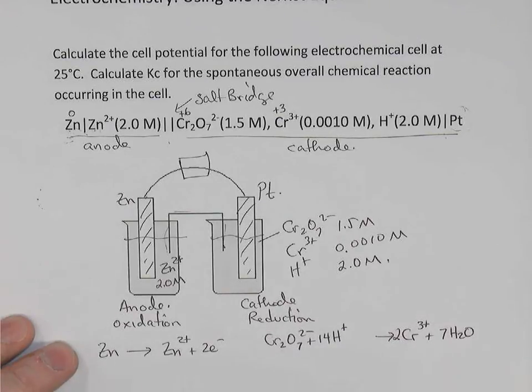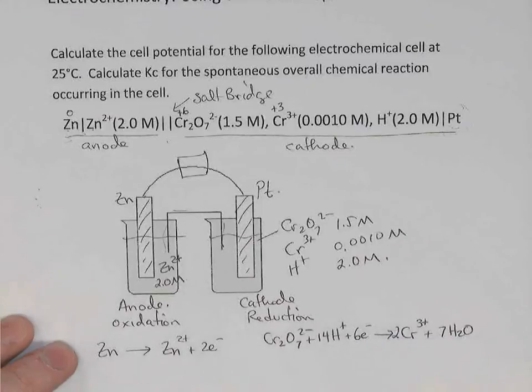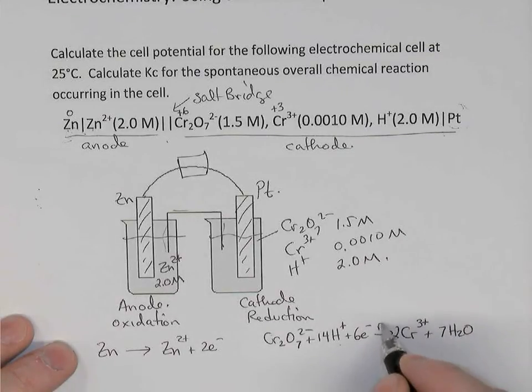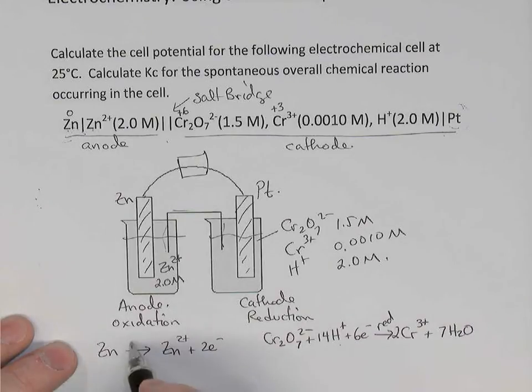The reaction is happening in an acidic solution we saw. And then to balance the charge, there's 14 positives and 2 negatives. So there's 12 positives on the left. And there's 2 times 3. There's 6 positives on the right. So to balance that, we'll need 6 electrons on the left. Seeing electrons on the left confirms that was a reduction reaction. Whereas electrons on the right earlier confirmed that was an oxidation reaction.